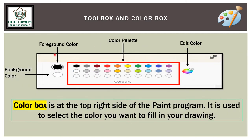The color box is on the top right side of the Paint program. It is used to select the color you want to fill in your drawing. It shows the background color and foreground color. There is also a color palette, and if you want to add a different color, use the Edit Color feature.